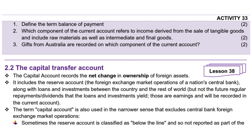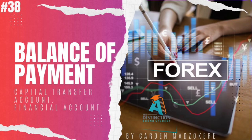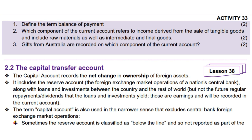Question 3: Gifts from Australia are recorded on which component of the current account? 2 marks. Current transfers. That's it for our homework. Let us dive into the lesson. In Lesson 38 we will look at the capital transfer account and the financial account.